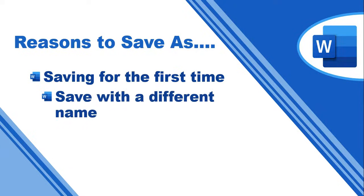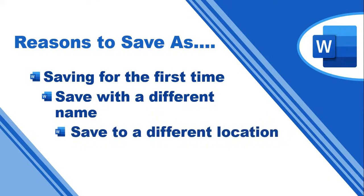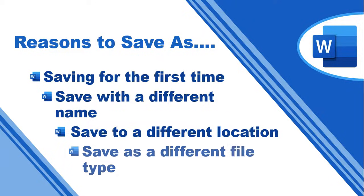You can use it if you want to save it with a different name. Maybe you've got a current document and you want to save it as a different version with a different name. Another option would be saving it in a completely different location — maybe keep the name but save it in a different place. But what we're going to focus on particularly today is how we can save it as a different file type.